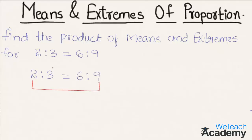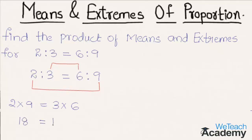As we know, product of extremes is equal to product of means. Here we get product of extremes, which is 2 into 9 on the left hand side, which is equal to product of means, that is 3 into 6 on the right hand side. 2 into 9 is 18, which is equal to 3 into 6, that is also 18.